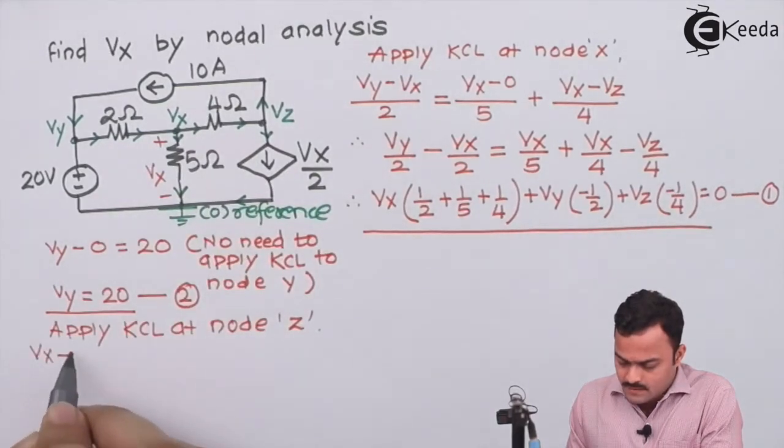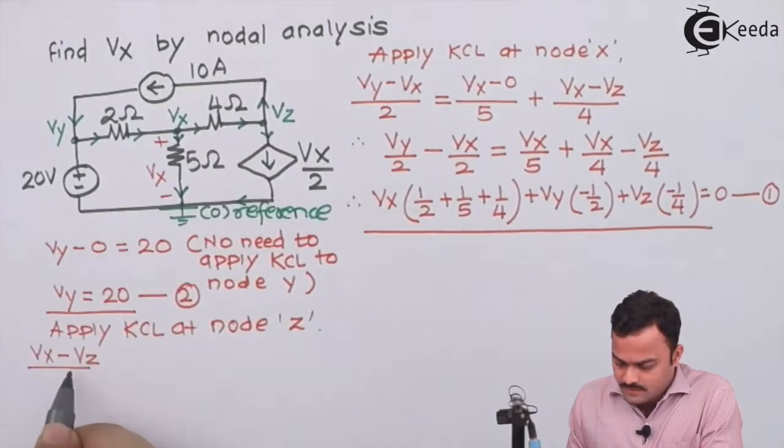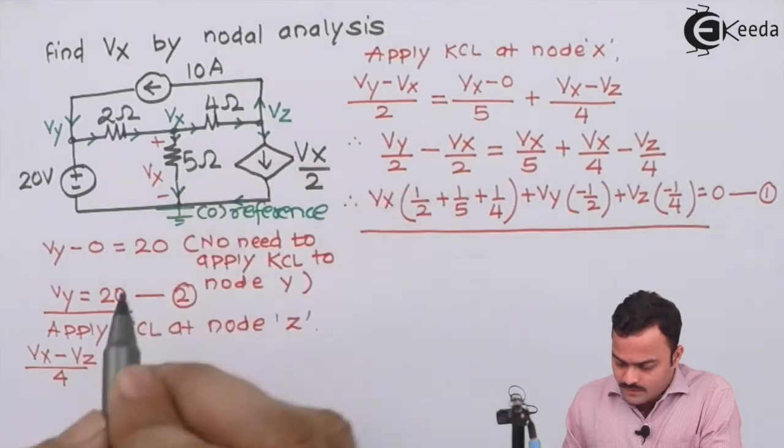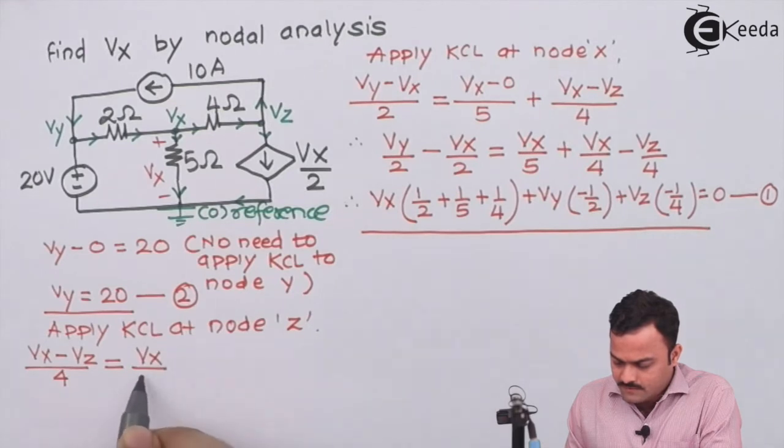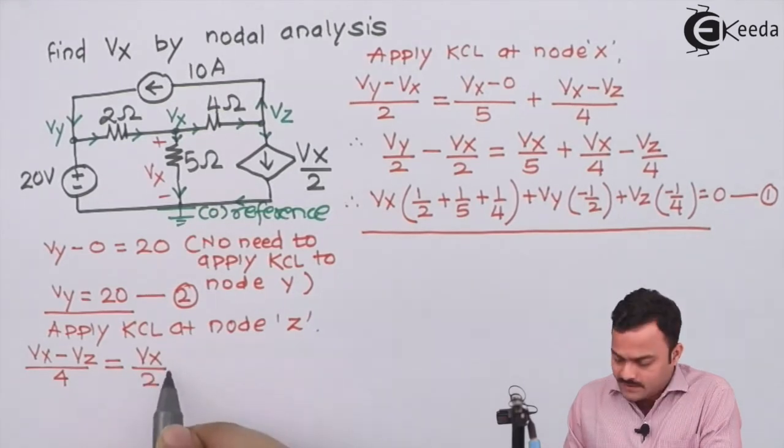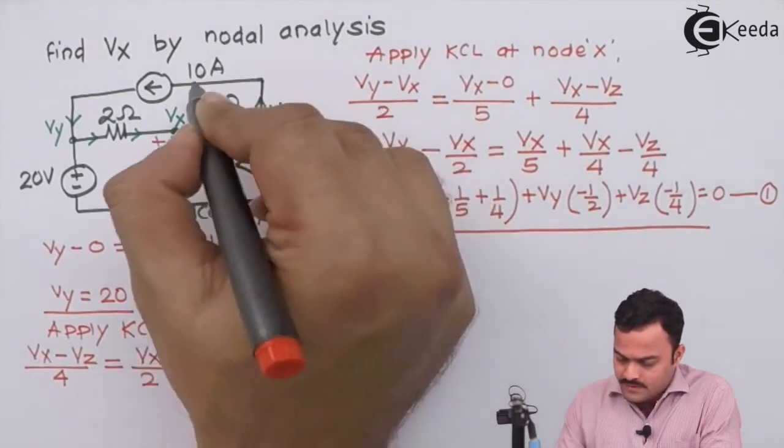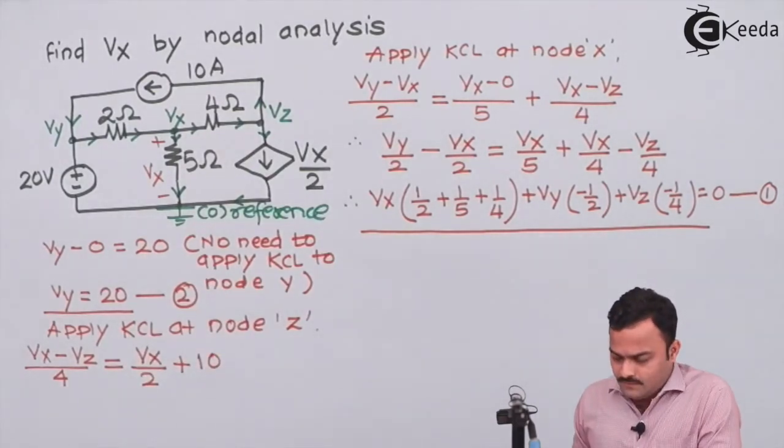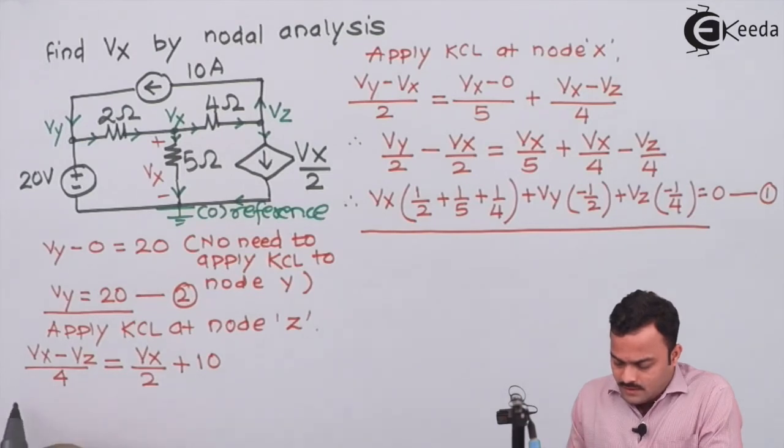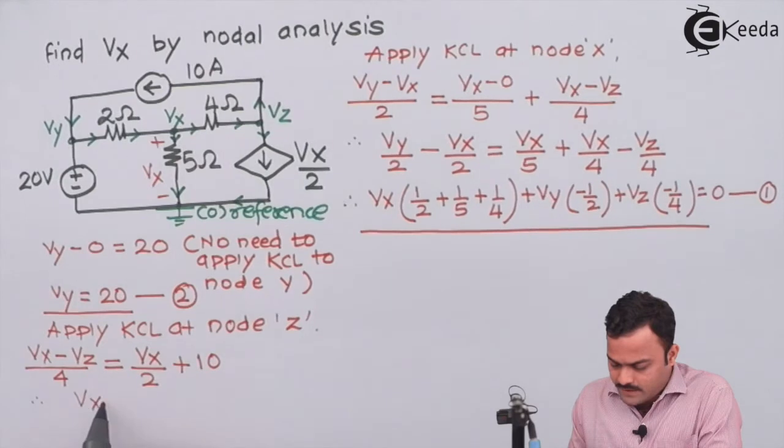At node Z we are having only one incoming current and two outgoing currents. So incoming current will have the equation Vx minus Vz upon 4. Outgoing current: Vx by 2 dependent current, and two—dependent current source plus independent current source—as plus 10.